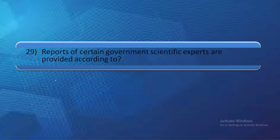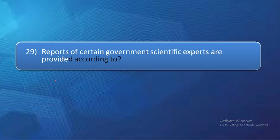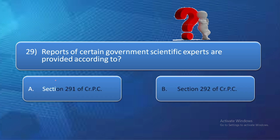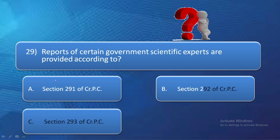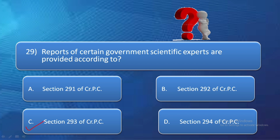Question number 29: Reports of certain government scientific experts are provided according to — option A: section 291 of CrPC, option B: section 292 of CrPC, option C: section 293 of CrPC, option D: section 294 of CrPC. Section 293 of CrPC deals with the reports of certain government scientific experts. So the right answer is option C — section 293 of CrPC.